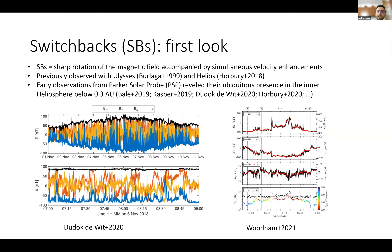One of the main discoveries of PSP is the presence of sharp rotations of the magnetic field, now known as magnetic switchbacks. These structures are visible in data from the first perihelion of PSP. We have the magnetic field in RTN components, and these structures are evident especially in the radial component — the blue line shows rapid reversals of the magnetic field.